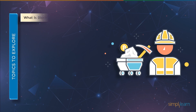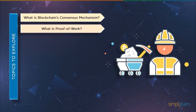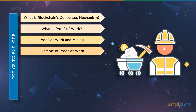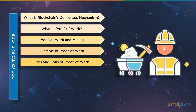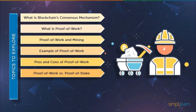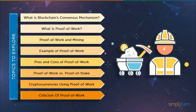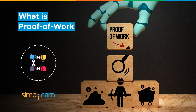Let's have a quick look at the topics we're going to cover in this video. First, we will understand blockchain's consensus method. Following that, we will understand what proof-of-work is in detail. Moving on, we will explore how proof-of-work and mining work together, followed by an example of proof-of-work functioning. Then we will look into some of the pros and cons of proof-of-work, after which we will have a crisp comparison between proof-of-work and proof-of-stake. Then we will come across cryptocurrencies using proof-of-work, and finally, we will see what criticism it's facing nowadays.